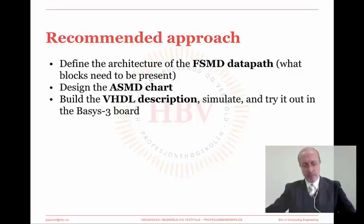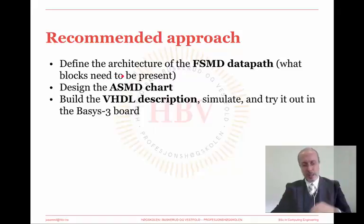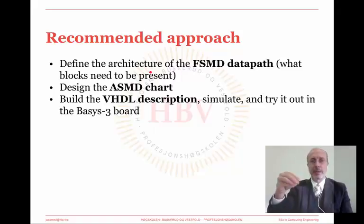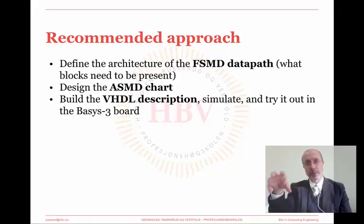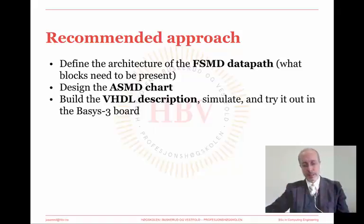I would recommend you to start by defining the FSMD data path. Once you have defined the data path blocks, you will be able to identify the outputs that have to be generated by the finite state machine in the control path — be it those outputs represented in the state boxes of the ASM chart or those in the conditional output boxes. That is to say the Moore and the Mealy outputs.